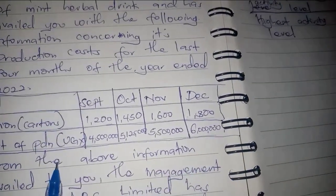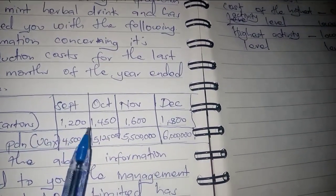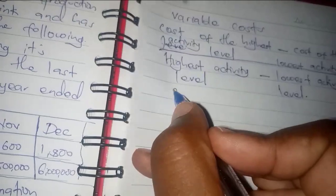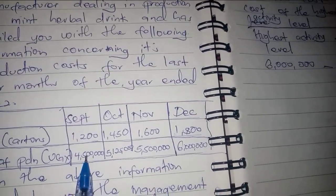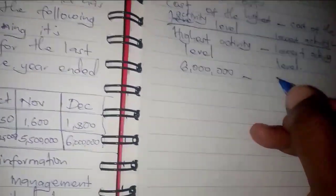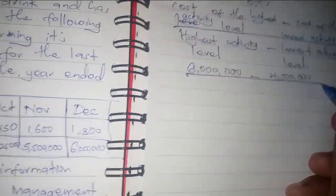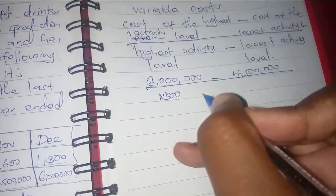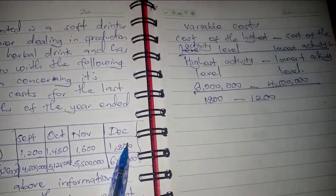Coming back to the question, we look for the cost of the highest activity level. The highest activity level is 1,800 cartons, and its cost is 6 million. Then we subtract the cost of the lowest activity level, which is 4.5 million. We divide by the highest activity level of 1,800 minus the lowest activity level of 1,200.